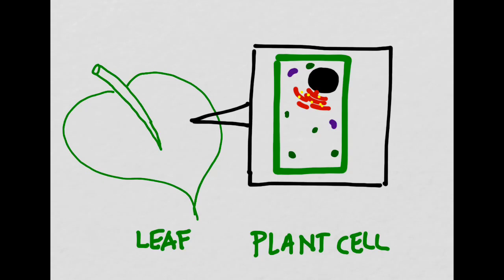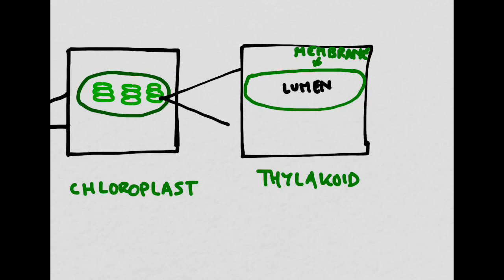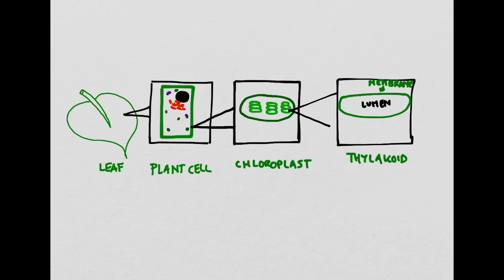The light-dependent reactions are actually happening inside of plant cells. Specifically, they occur in the organelle called the chloroplasts. Within the chloroplast itself, the light-dependent reactions occur in something called the thylakoid. Remember, this is happening at a very, very small scale.